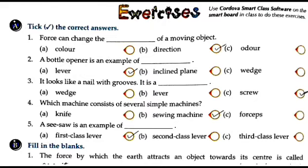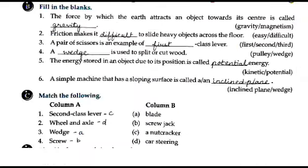MCQ 4: A see-saw is an example of which class of lever - first, second, or third? The correct answer is first class lever. Now moving to fill in the blanks. Question 1: The force by which the earth attracts an object towards its center is called blank.